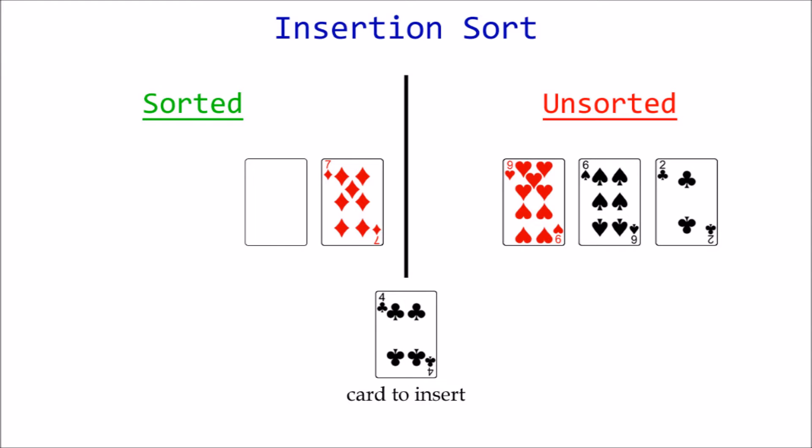7 is shifted to the right by 1, filling the open slot and opening up a new one. There's nothing else to compare to, so this is where we insert 4.